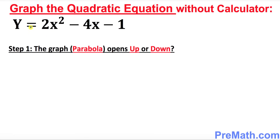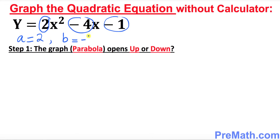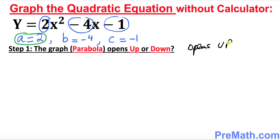In the very first step we have this quadratic equation in standard form. Let's find out what our a, b, and c are. In this case, a equals 2, b equals negative 4, and c equals negative 1. The first question is: does this parabola open up or open down? Always check your a — if the leading coefficient is positive, it opens up. So this graph opens up.